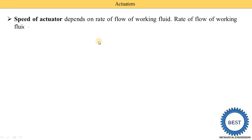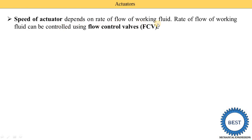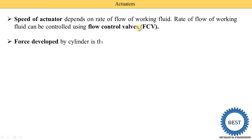The speed of the actuators depends on the rate of flow of the working fluid. Speed depends on the quantity of working fluid supplied, i.e., the flow rate Q. The rate of flow of the working fluid can be controlled by using flow control valves, abbreviated as FCV. By using the FCV, we are able to control the speed of the actuators.